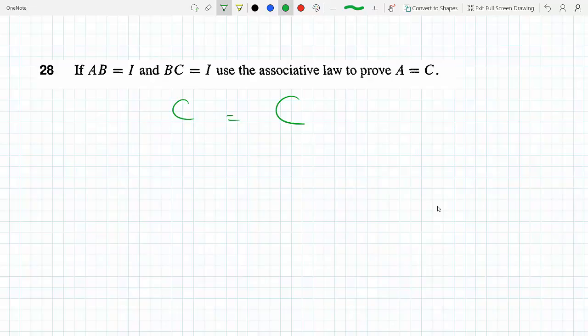Since identity matrix times C equals C, I can say IC equals C. Now since AB equals I, I can replace this identity matrix with AB and pre-multiply by C, so (AB)C equals C.